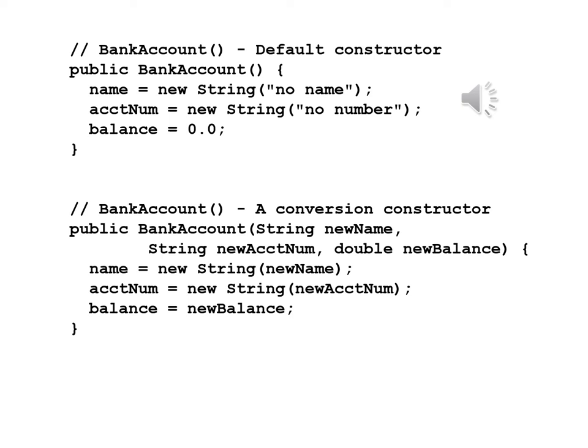Now a conversion constructor: public BankAccount, String newName, String newAccountNum, double newBalance. Name equals new String newName, accountNum equals new String newAccountNum, balance equals newBalance. In this way, we have all three properties initialized.